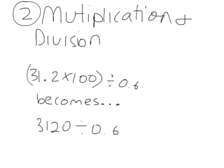The second step is multiplication or division. So this problem that I had originally becomes this, because 31.2 times 100 is 3,120. And then I just have to divide by 0.6.